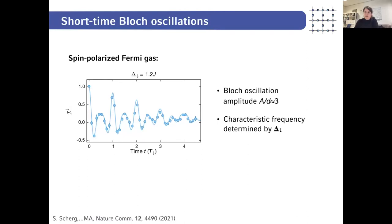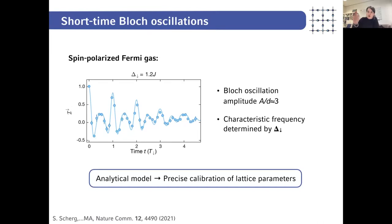This can all be solved analytically. We can derive an equation for the imbalance as a function of time, which is a nice way to calibrate our system — parameters J and the tilt energy are extracted from these oscillations measured in the experiment. Here you see one trace measured at a tilt energy of 1.2 J with a spin-polarized Fermi gas, and on top you see a decay or dephasing due to the harmonic confinement.